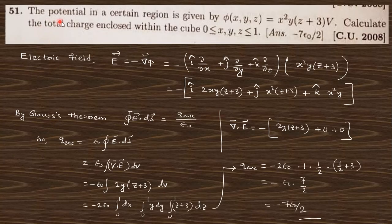The first question says the potential in a certain region is given here, φ(x,y,z) = x²y(z+3)V. Calculate the total charge enclosed within the cube 0 ≤ x,y,z ≤ 1. From potential you can get the electric field: E = -∇φ, you will get this electric field.